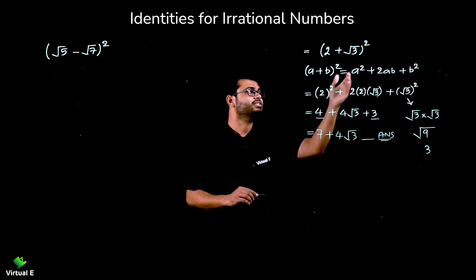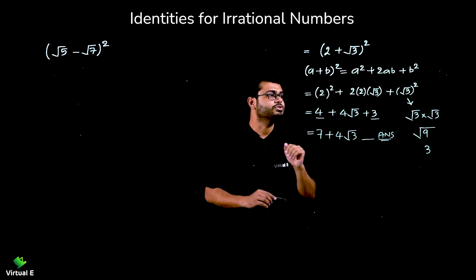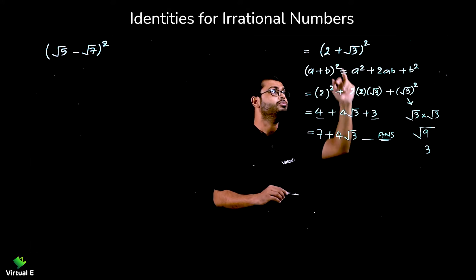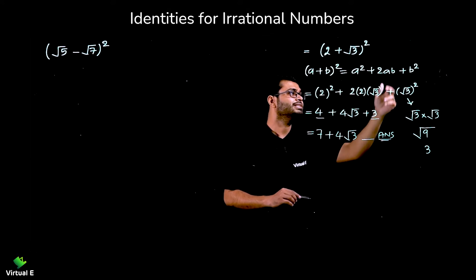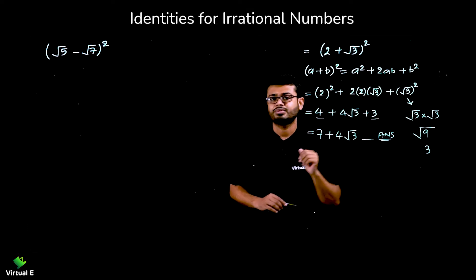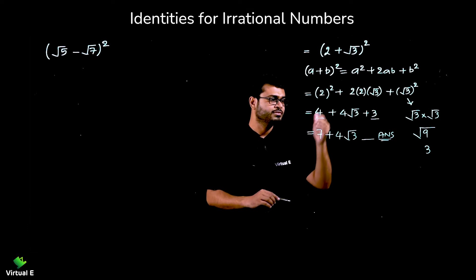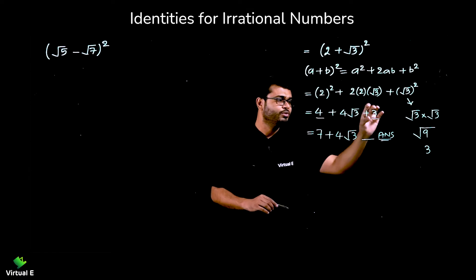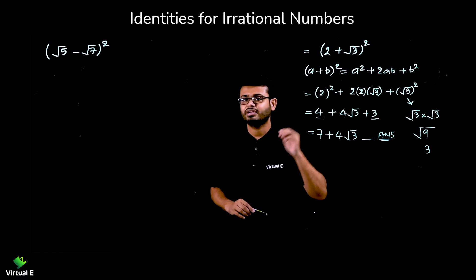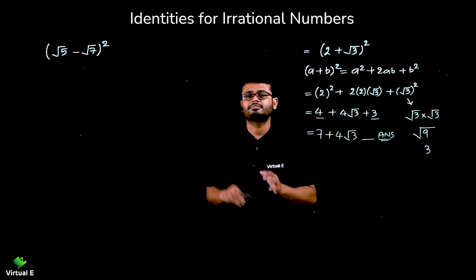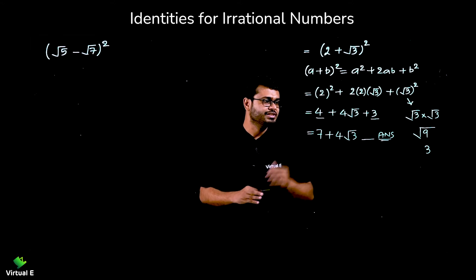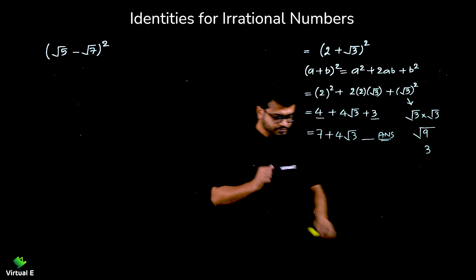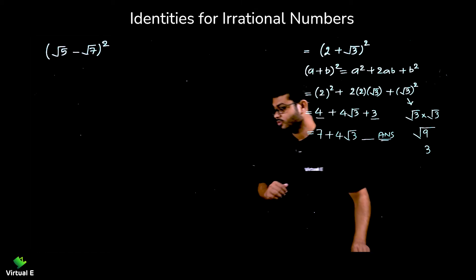So (a + b)² = a² + 2ab + b². Here a is 2, so a² = 2². Then 2ab where a is 2, b is √3. And b² = (√3)². Simplify further and get the answer. Check if any simplification is possible; if not, write it as is. If addition is possible, go ahead.